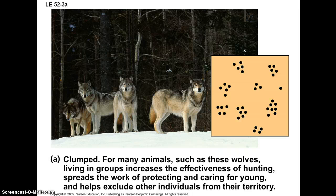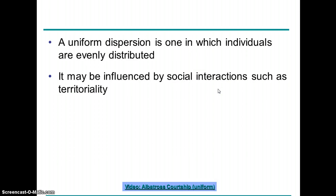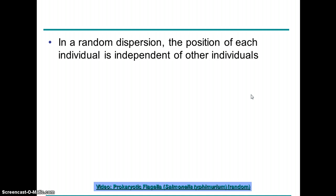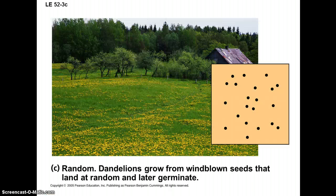There are different types of dispersion. You can have a clumped dispersion where individuals are in little groups around the landscape, like wolf packs. You can have a uniform dispersion where they're relatively equally dispersed across the landscape — colonial marine birds like penguins are like that, with nests equidistant from each other. And of course you can have a random dispersion where there's no real pattern to it.